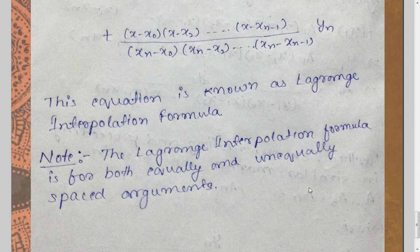What this means is that the difference between two consecutive values of x need not be the same. For example, if the values of x are 2, 3, 5, the difference between 2 and 3 is 1, and between 3 and 5 is 2. This is the case where Newton's forward and Newton's backward interpolation formulas fail, and this is where the Lagrange interpolation formula is useful. It is applicable for both equally and unequally spaced arguments.